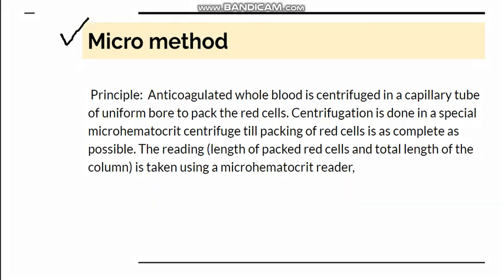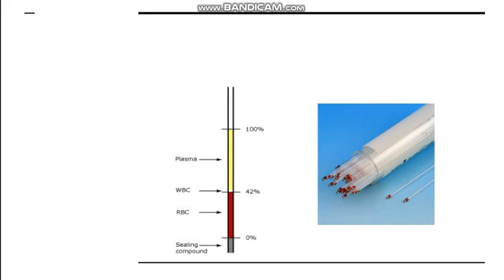In the micro method, anticoagulated whole blood — mostly capillary blood — is collected into a very narrow capillary tube. Centrifugation is then performed in a special microhematocrit centrifuge, and the reading is taken using a microhematocrit reader. The capillary tubes are very thin, requiring very little blood, and this method is accurate and widely used.